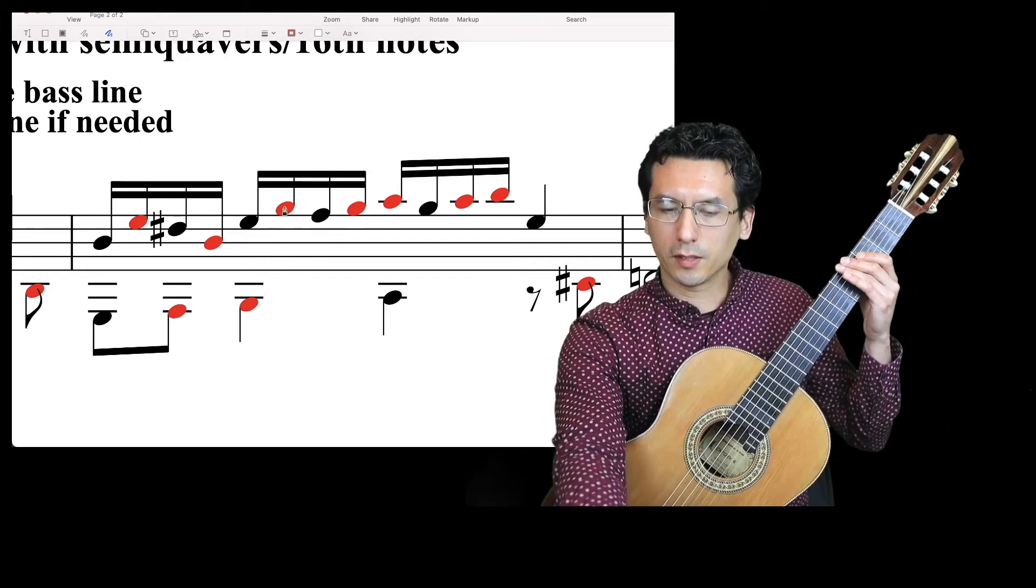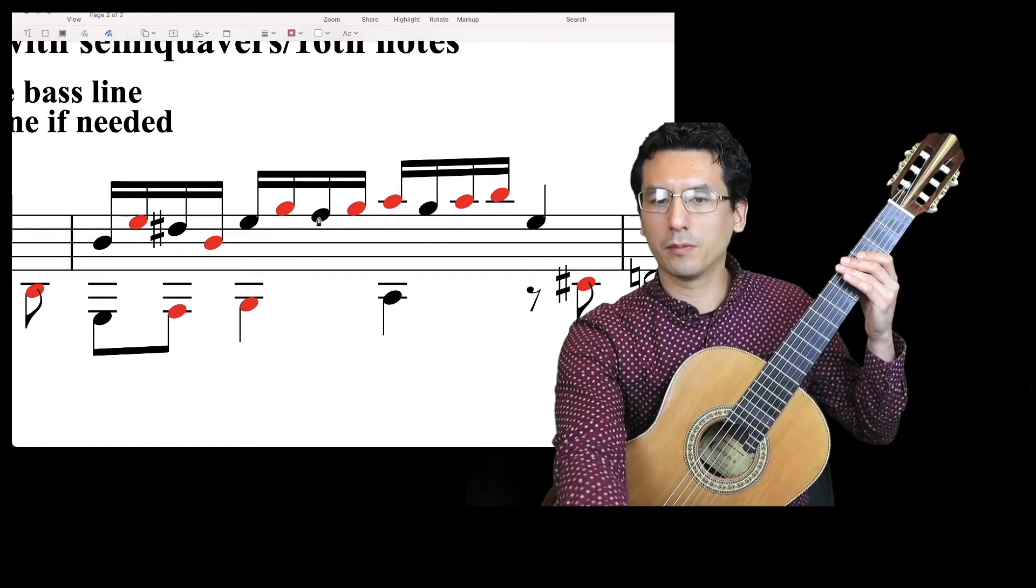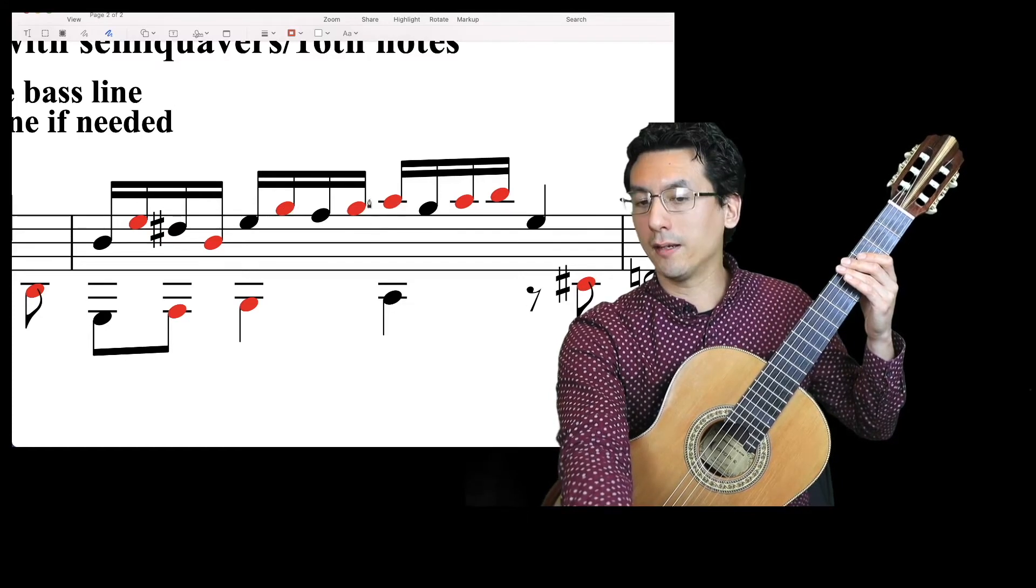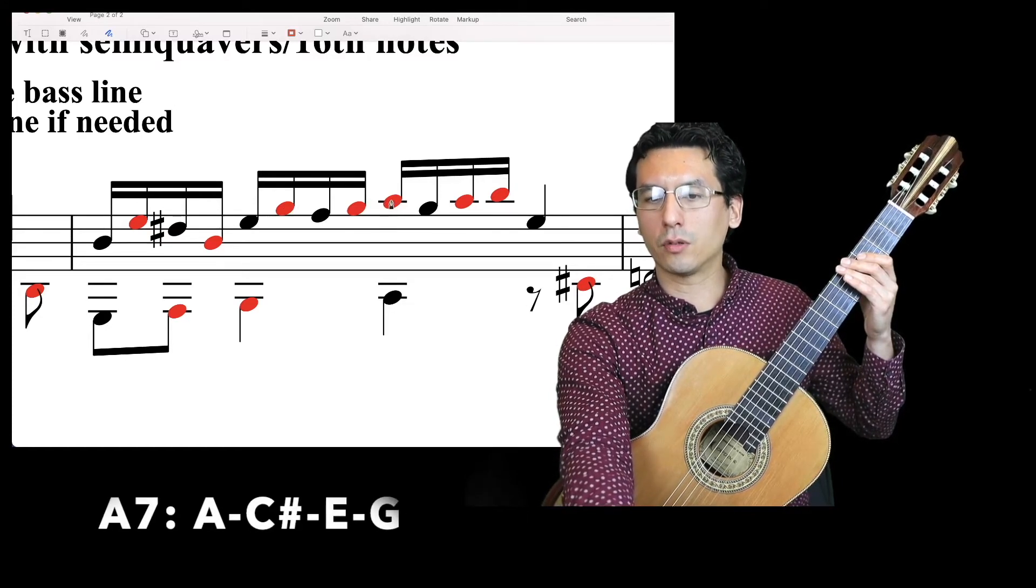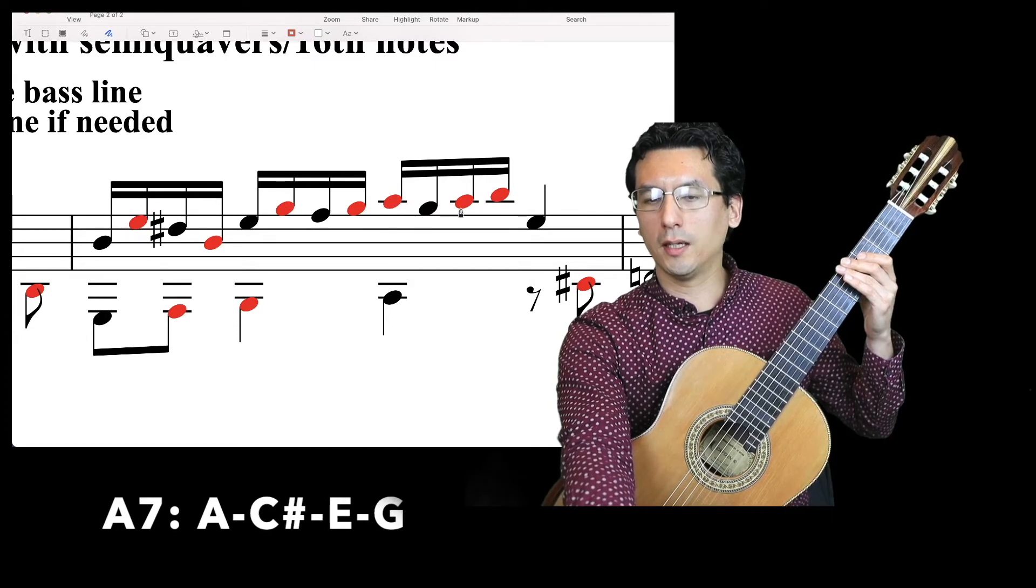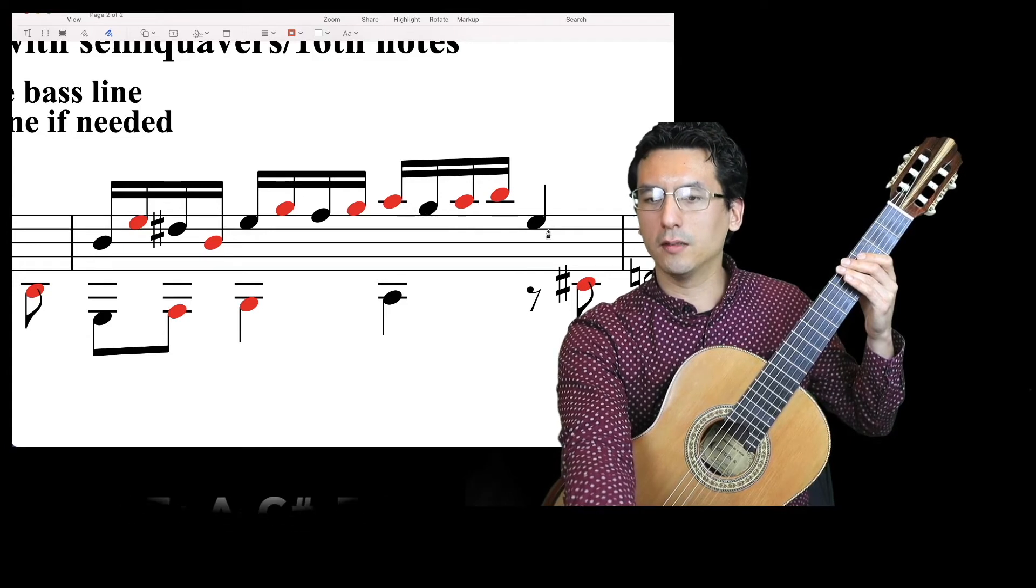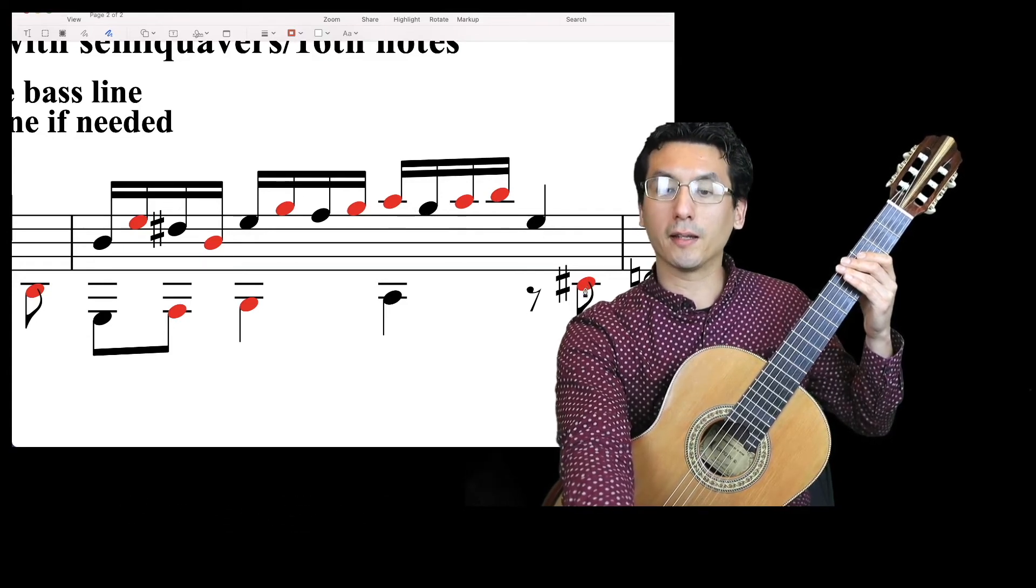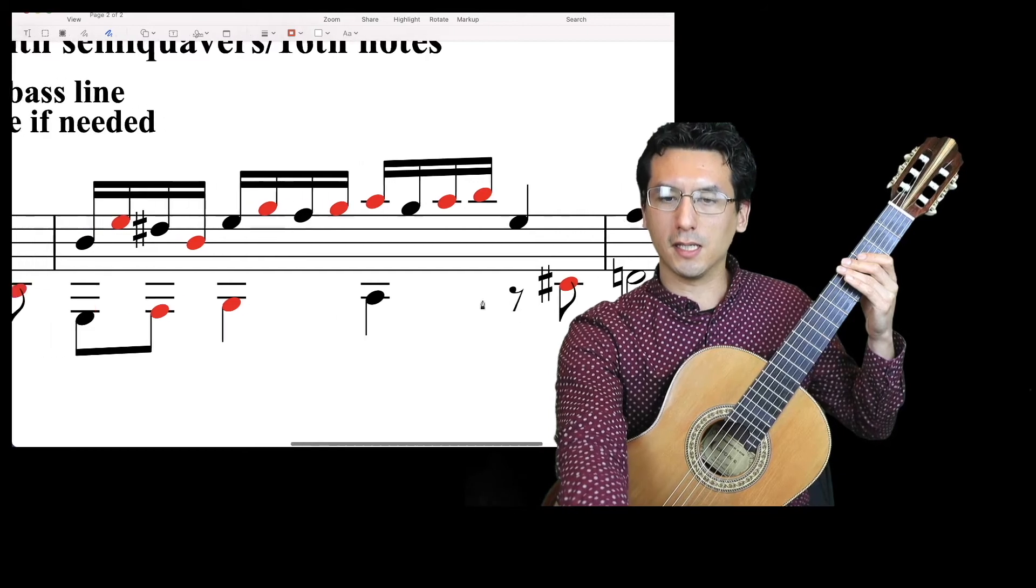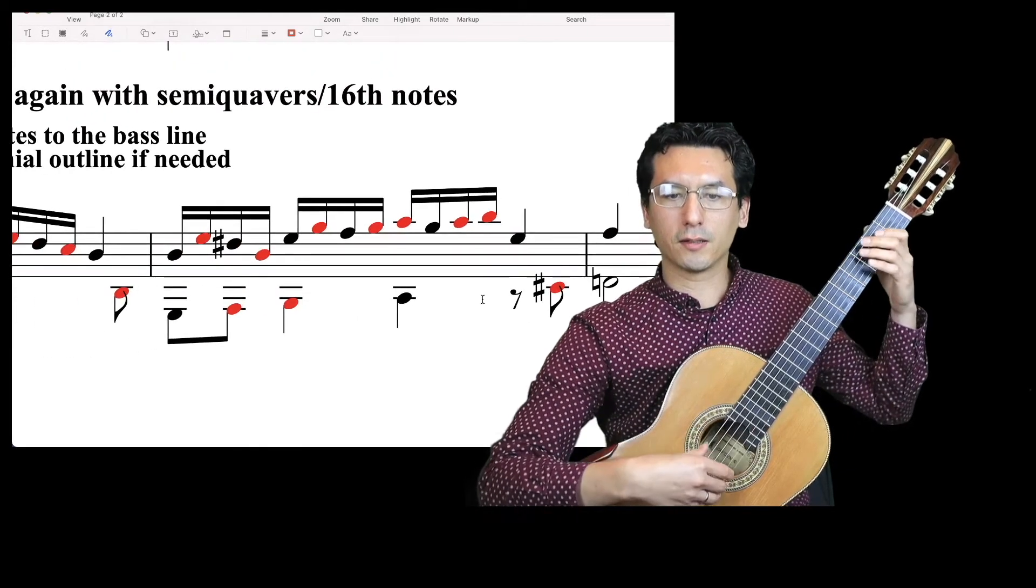And then we get a similar sort of figure here, going up, back, and then going up to A7. This is an A7 chord. So A, G, A, B, just going around that G, and then dropping and adding that C sharp in, which pulls us to the last D chord there.